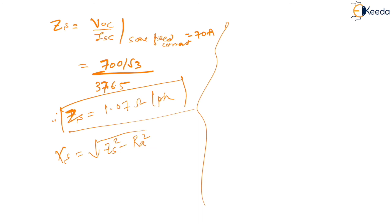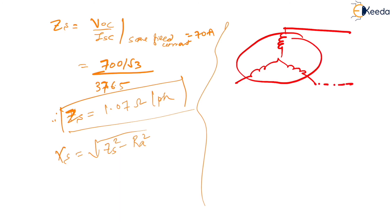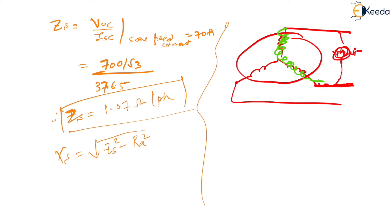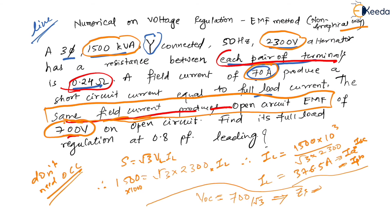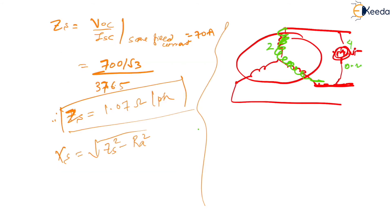'Each pair of terminals' means you measure resistance across two external terminals of the machine. That path goes through two phase windings in series, so the measured value equals two times the per-phase resistance. Therefore, RA per phase = 0.24 / 2 = 0.12 ohms.